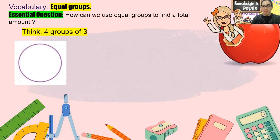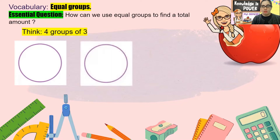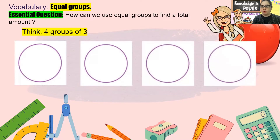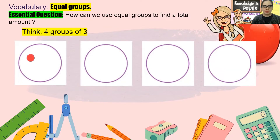Let's think about four groups of three. To show four groups of three, we're going to use four big circles — they represent the groups, like the ones we have here. So four groups of three means I need to put three in each of them: one, two, three.